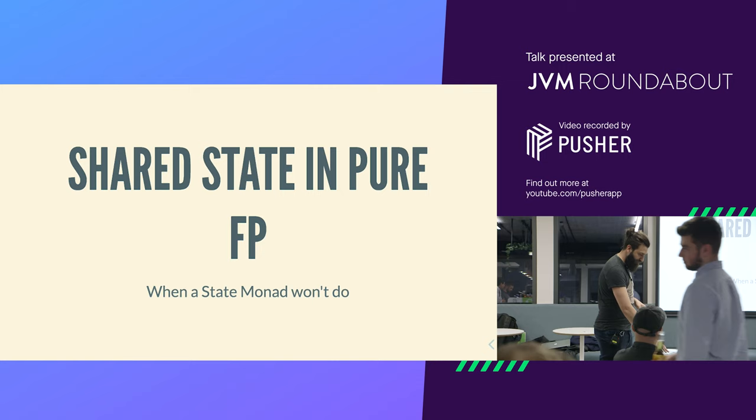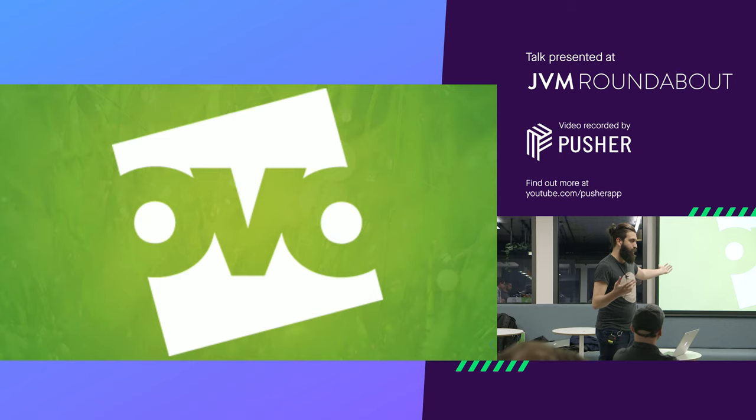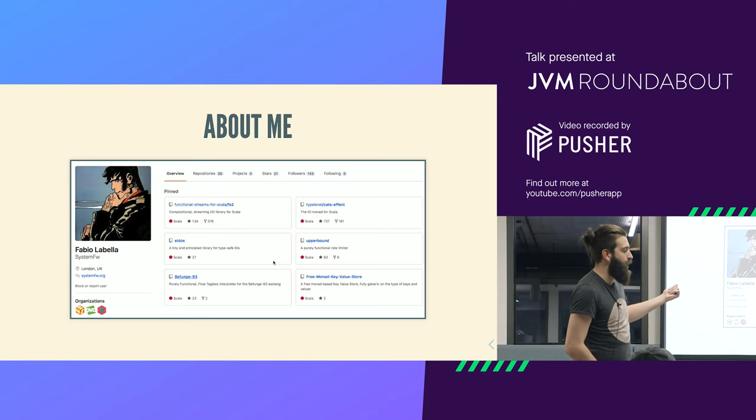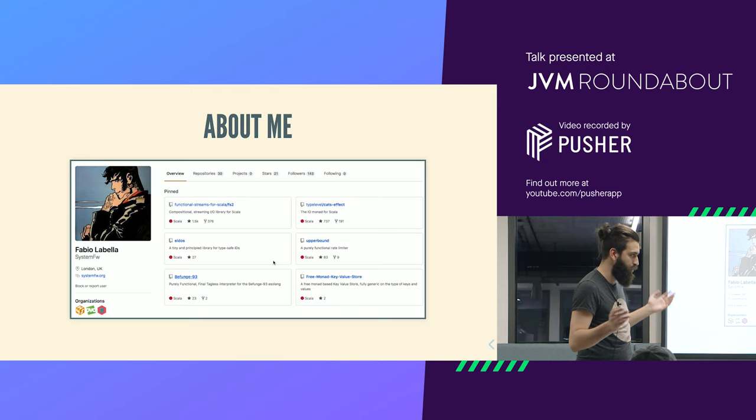So first of all, who am I? My name is Fabio. I'm a principal engineer here at Over Energy and an open source author of a system called Formaga. I'm a core maintainer of FS2 and Cats Effect and a bunch of other libraries in the purely functional Scala ecosystem.